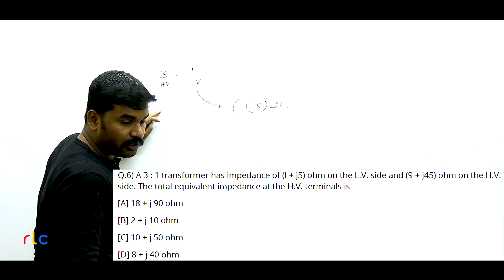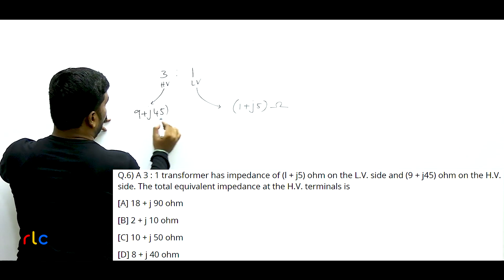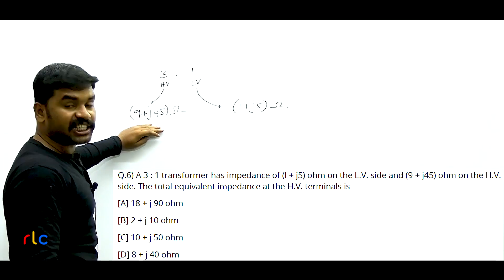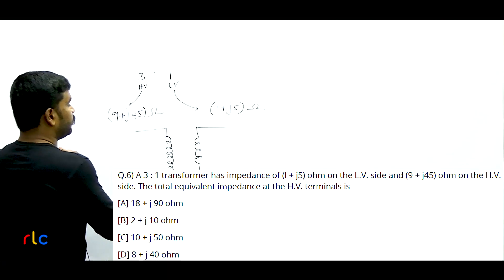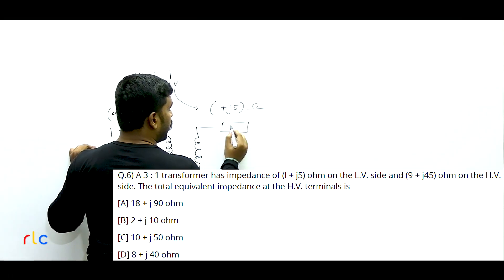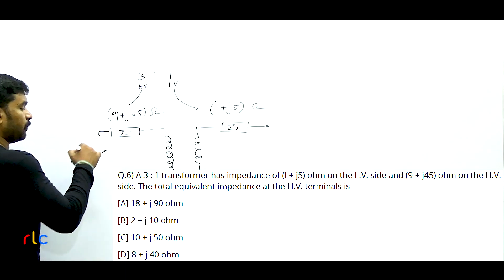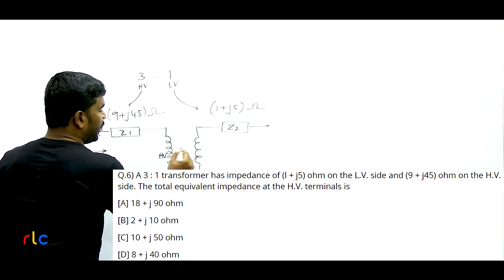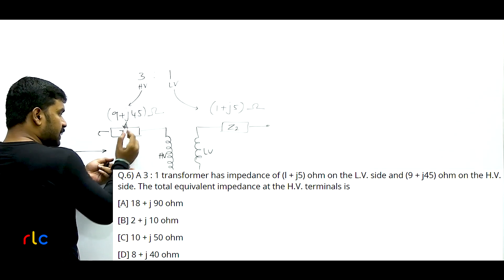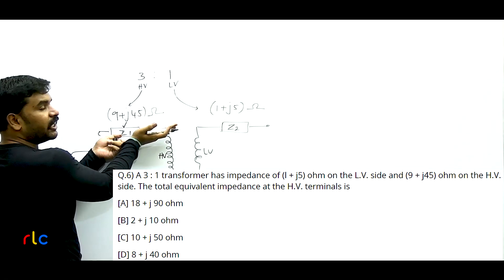12th question: When compared to power transformers, a distribution transformer has low percentage impedance and high I²R to core loss ratio. Percentage impedance is the per unit impedance. The impedance of a transformer is given by V²/S. Distribution transformers operate at much lower voltage ratings than power transformers, so they have lower impedance and thus lower percentage impedance. Options A or D could be correct — low percentage impedance is confirmed.